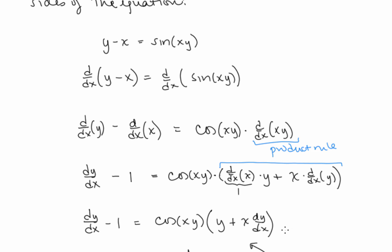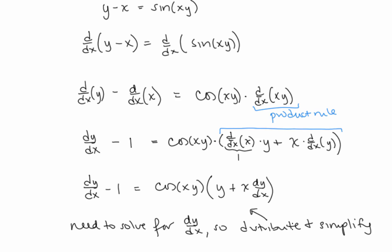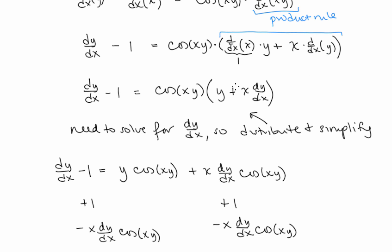Remember our goal is to find dy/dx, because that will tell us the slope of that curve at any given point. So we need to solve for dy/dx. We collect our dy/dx terms on one side of the equation, then factor it out and simplify. First we need to distribute in order to move the dy/dx over and collect it. So this is going to be y·cosine(xy) plus x·dy/dx·cosine(xy).